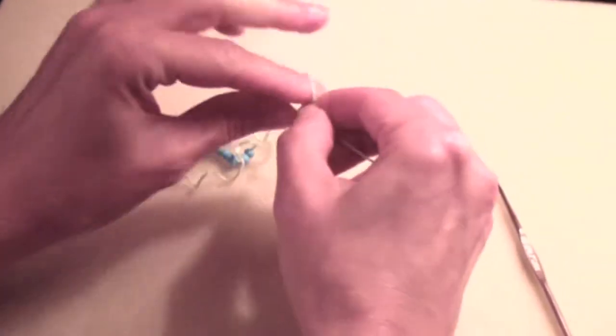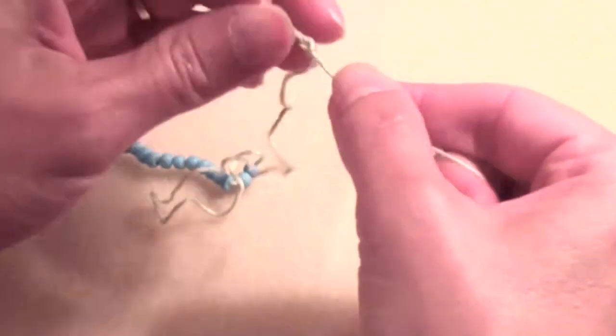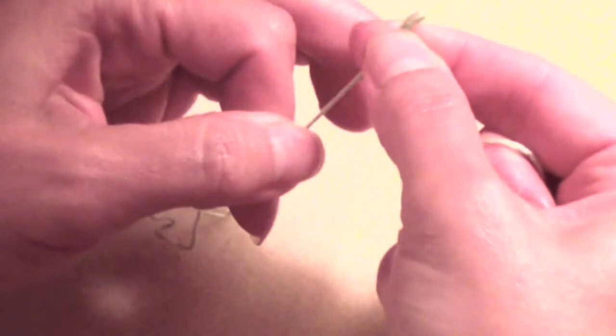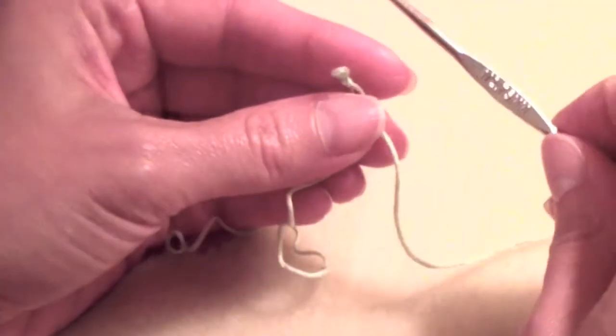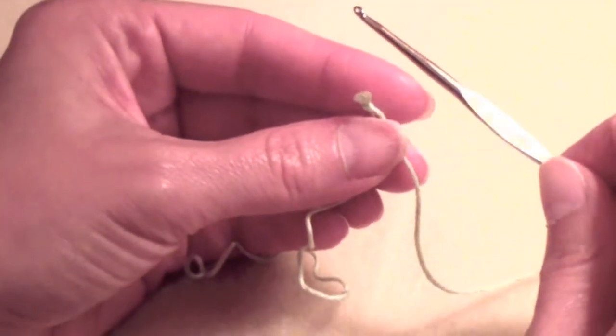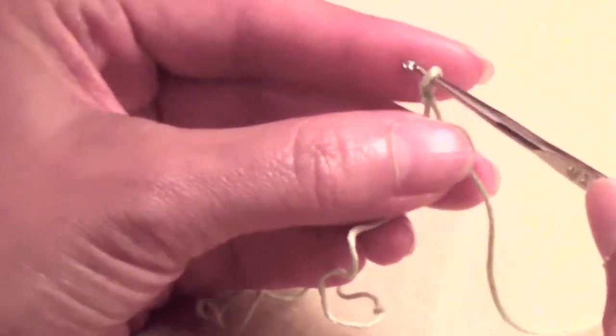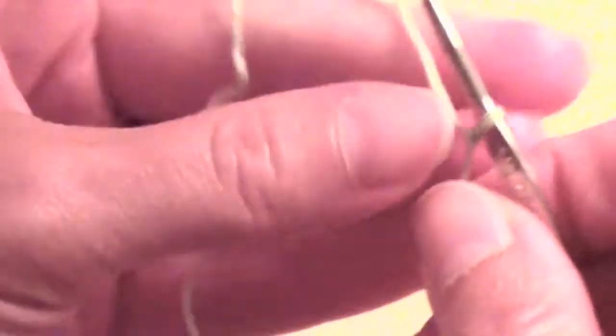Make a slip knot and using a 2.75mm crochet hook, chain 2.